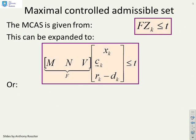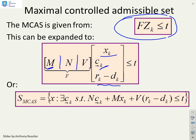Now just a reminder, once you've found the MCAS in the form FZK less than or equal to T, you can of course recognize that F could be split into an M, an N, and a V, where M multiplies on X, N on C, and V on R minus D. And so we could write our admissible set in what might be considered a more useful form like this: NC future plus MX plus V into R minus D less than or equal to T. And that's often convenient.